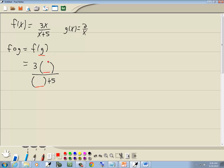But g, we said was 2 over x. So put that in. 3 times 2 gives us 6. We've got 6 over x over 2 over x plus 5.